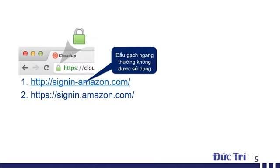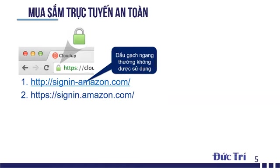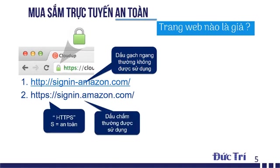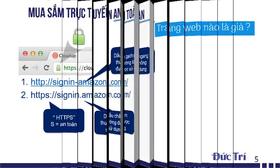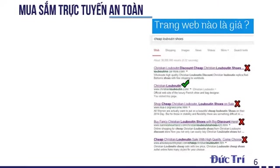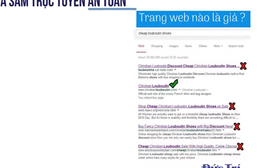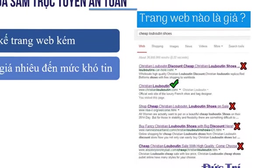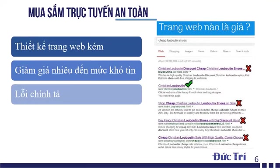Tiếp theo, để mua sắm an toàn, chúng ta cần lưu ý phát hiện những trang web nào là giả. Những trang web giả thường có thiết kế trang web kém, bố cục lộn xộn, giảm giá nhiều đến mức khó tin, thường có lỗi chính tả và ít đánh giá nhận xét từ người dùng. Thông tin liên lạc cũng không rõ ràng, cụ thể.